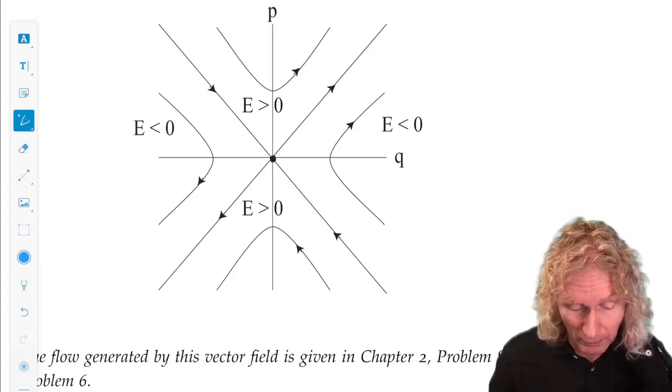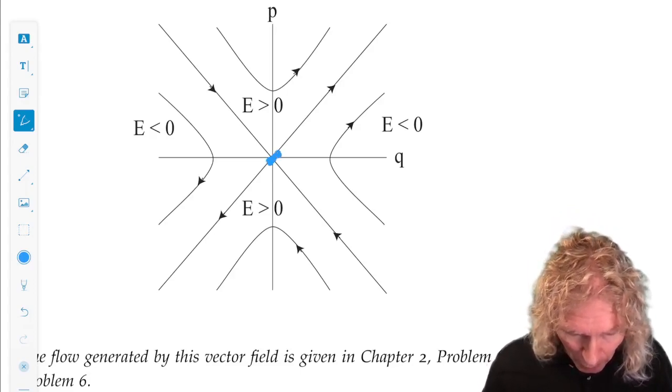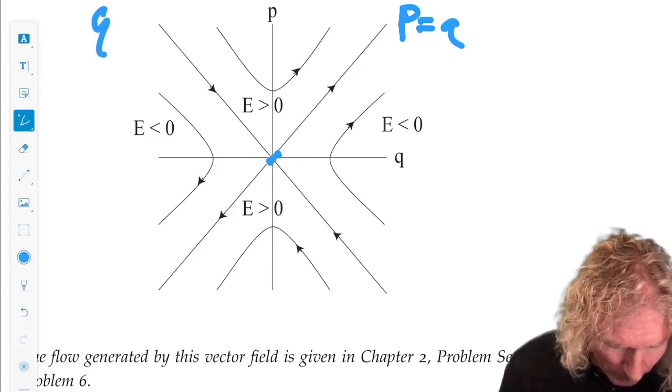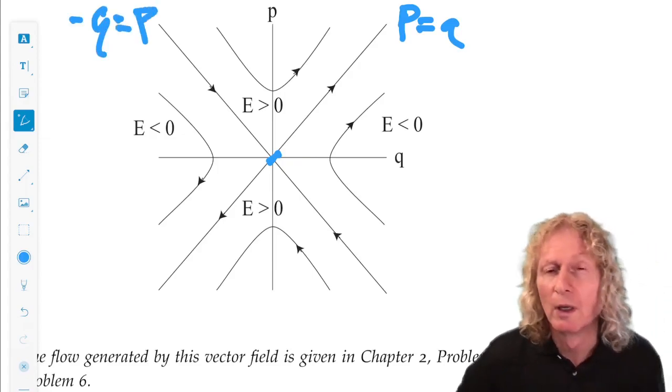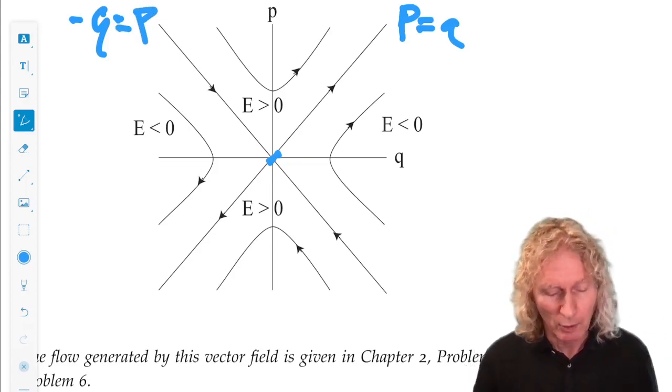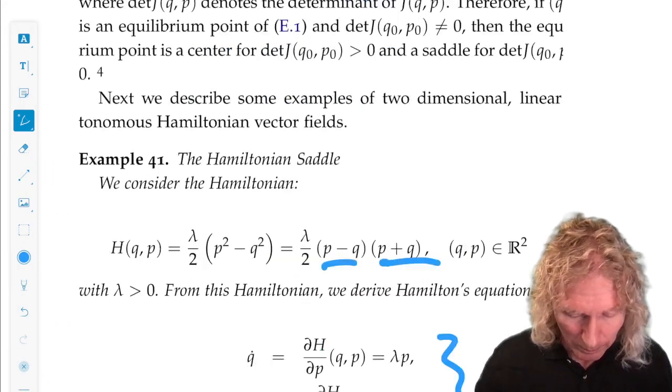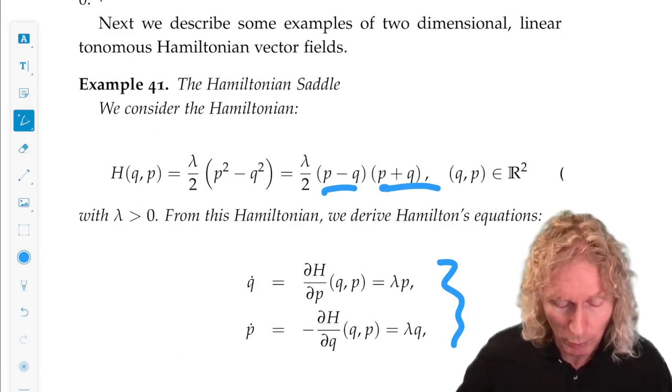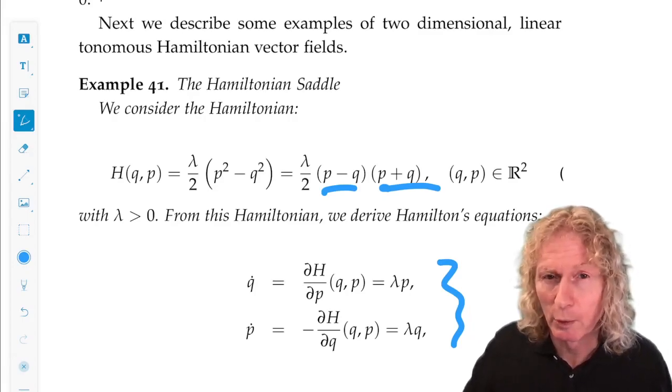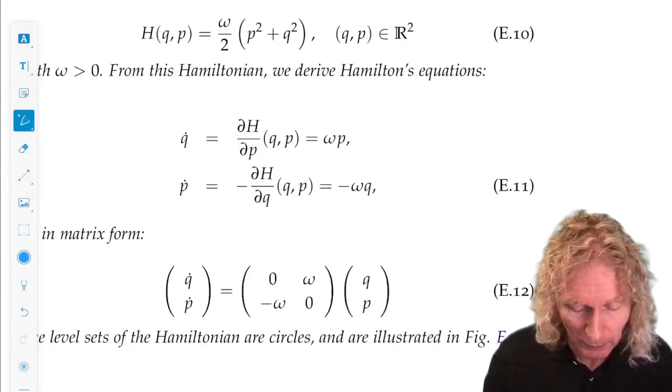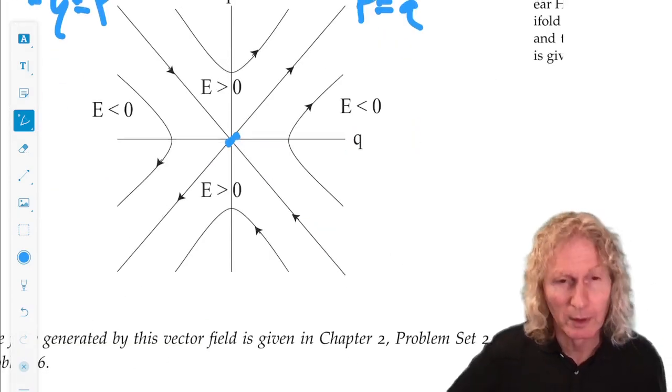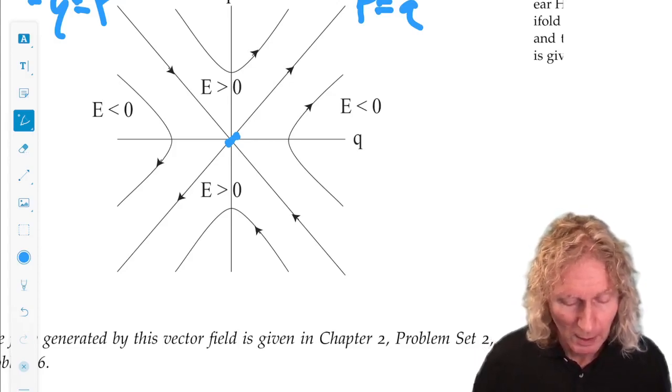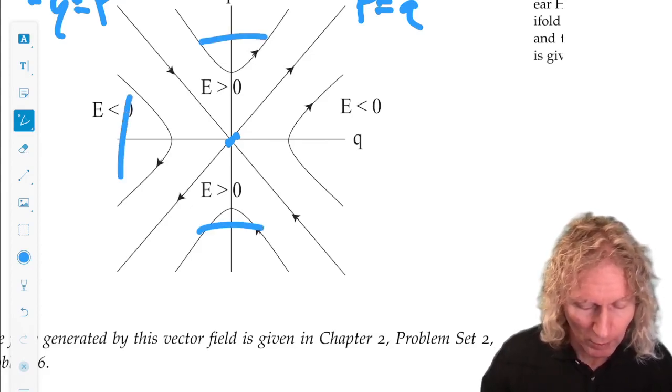And this is what we get. This is where the saddle point is, so the origin is a saddle point. And p equals q and p equals minus q are these two 45-degree lines. If you think about going back to Hamilton's equations, H equals zero is the value of the Hamiltonian at the origin, the saddle point, but it's also the value of the Hamiltonian for p minus q equals zero and p plus q equals zero, the stable and unstable manifolds. The stable and unstable manifolds divide the phase plane up into four quadrants.